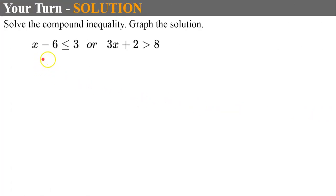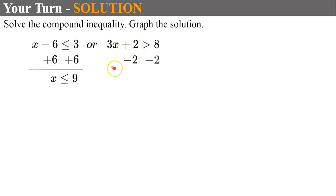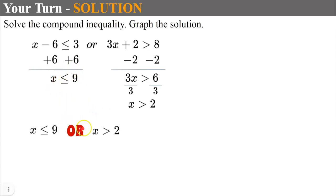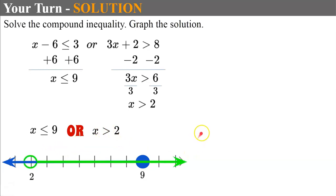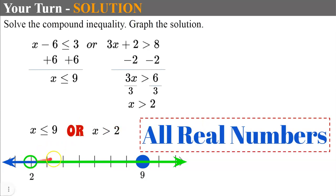Welcome back. We have an OR. Solving the first by adding 6 to each side gives x less than or equal to 9. Solving the second by subtracting 2 from each side gives 3x greater than 6, then dividing by 3 gives x greater than 2. We're looking for a union. Graphing: a closed circle on 9 shading left, and an open circle on 2 shading right. The entire number line is shaded, so the solution is all real numbers.